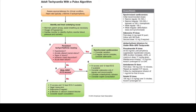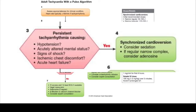This is the adult tachycardia with a pulse algorithm from the AHA, the American Heart Association. It's great to look at beforehand when you're on the ward so you can acquaint yourself with everything here. What I want to focus on is this middle part — step three — because this goes through what makes a patient unstable.